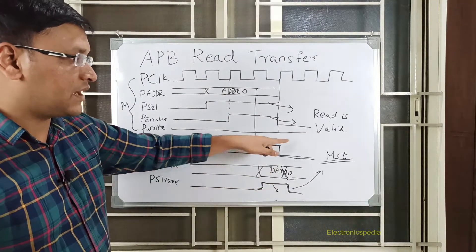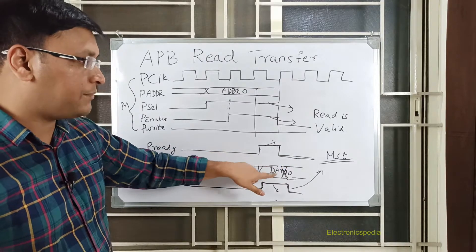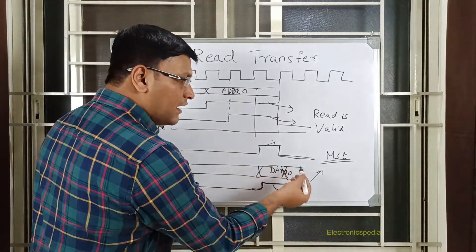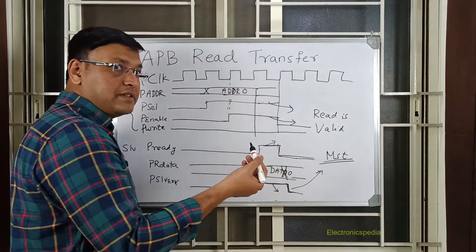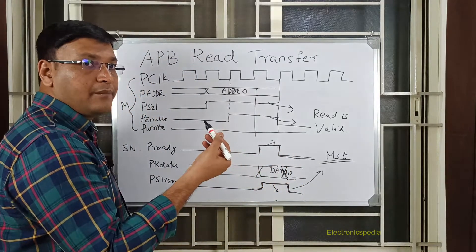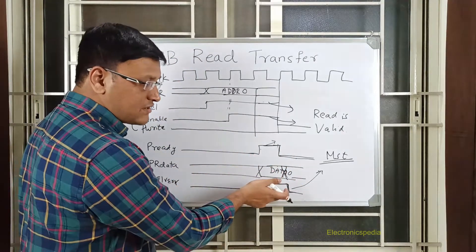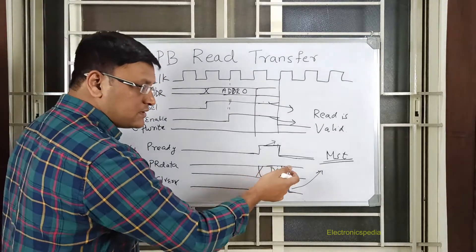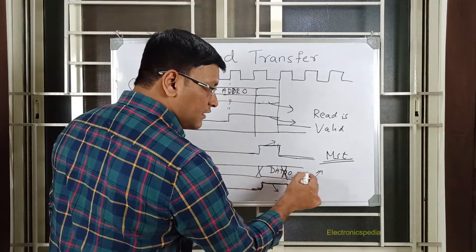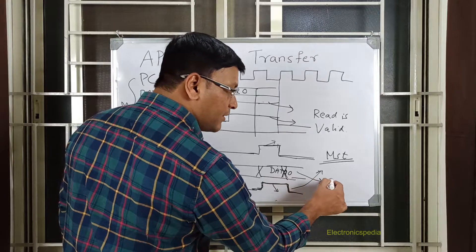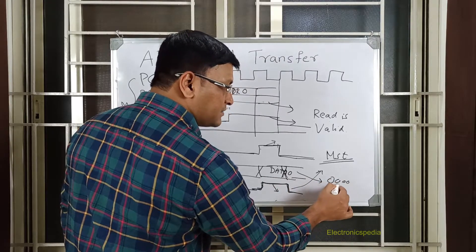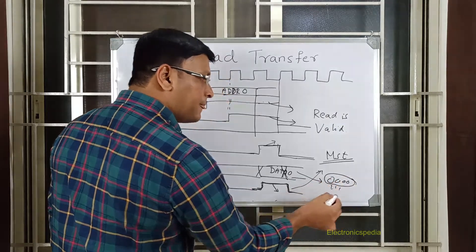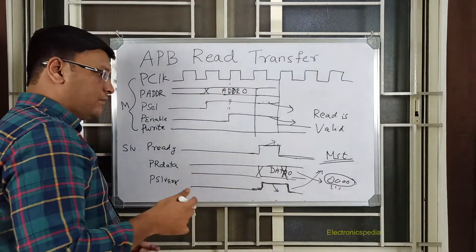It is the duty of the master to look for this PSLVERR signal also, because if it is asserted, the data can be a garbage value. Usually when the slave is asserting an error response, the data will be all zeros or sometimes all ones, but mostly it will be all zeros - so it doesn't have any meaningful value.